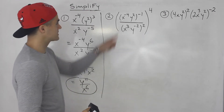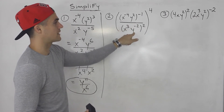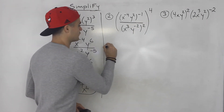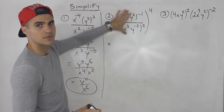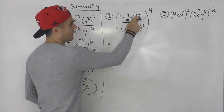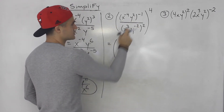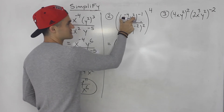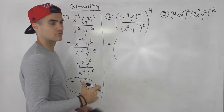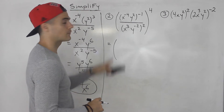Moving on to number two: x to the negative four, y squared, all to the power of negative one, over x to the power of three, y to the negative two, all to the power of two — and then this whole fraction is to the power of four. As I mentioned before, I like to first simplify what's in the bracket before dealing with the outer exponent. I'm going to distribute that exponent rather than bring the whole bracket down, because there's already a lot going on. You could bring the whole bracket down if you want, but I'm going to keep it up top.